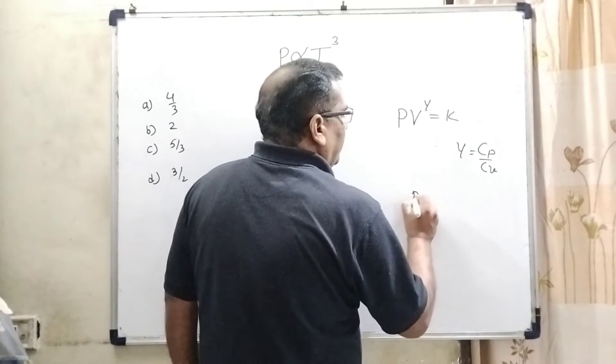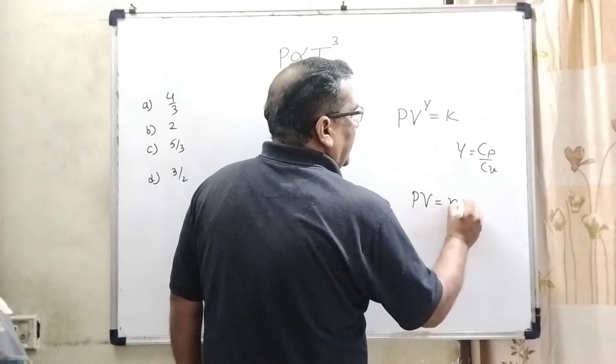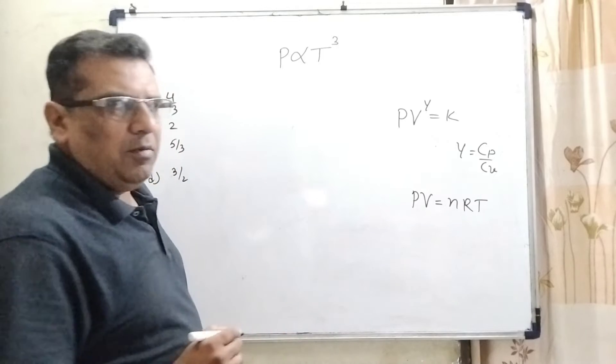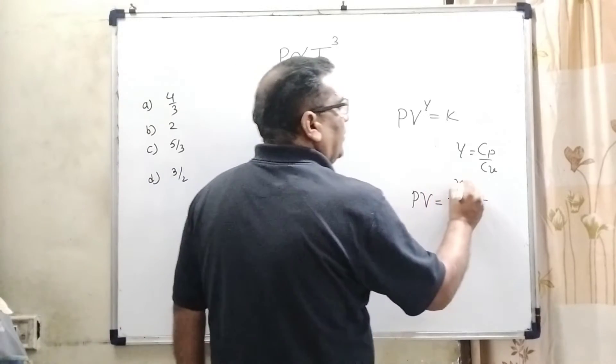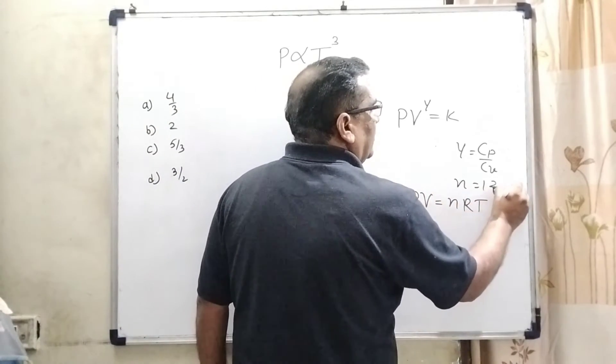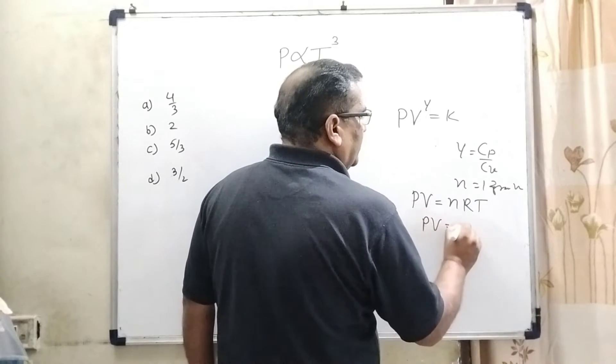Now, for ideal gas PV equal to nRT. Here n is n gram mole. We are using n equal to 1 gram mole. So PV equal to RT.